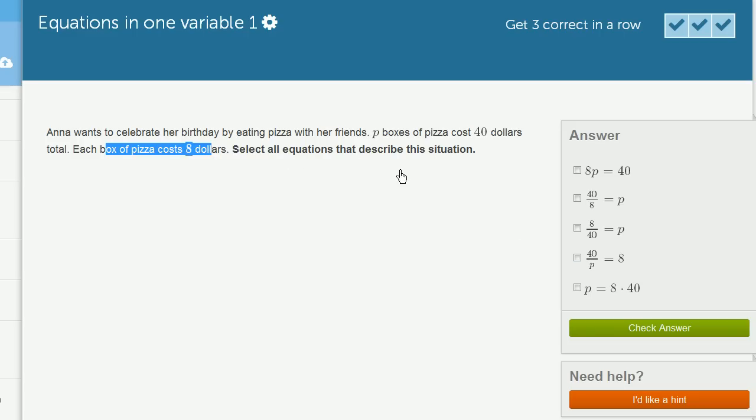Before I even look at that, let me try to construct one in my own brain. So P boxes of pizza cost $40, each box costs $8. One way I could say what would be the total cost of pizzas in terms of P? Well, it's going to be the number of boxes that I get times the cost per box. So it's going to be P times 8.